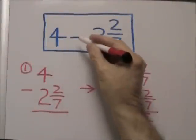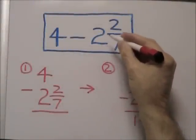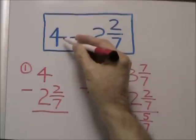In this problem, 4 minus 2 and 2 sevenths, we're subtracting a mixed number from a whole number.